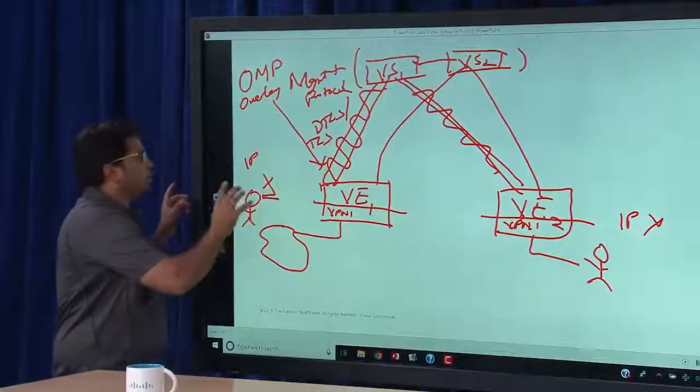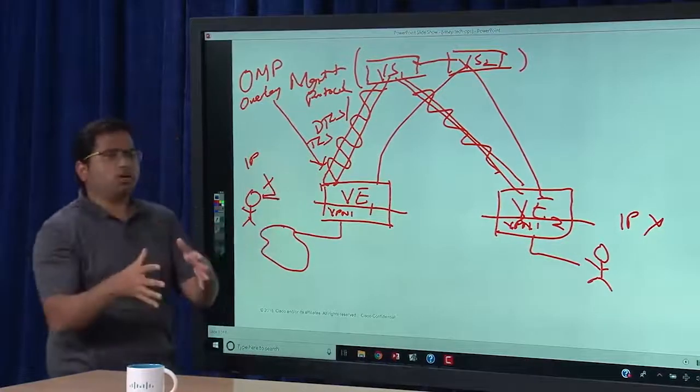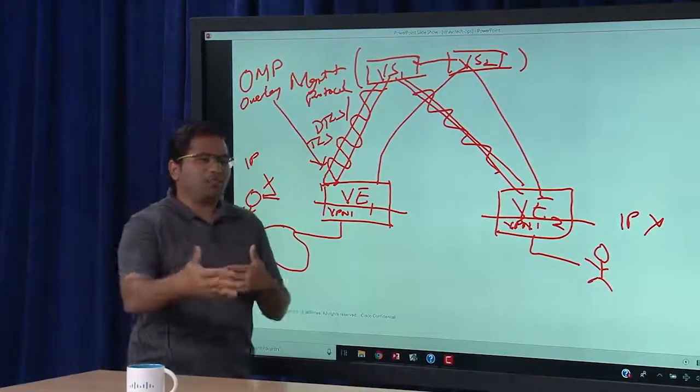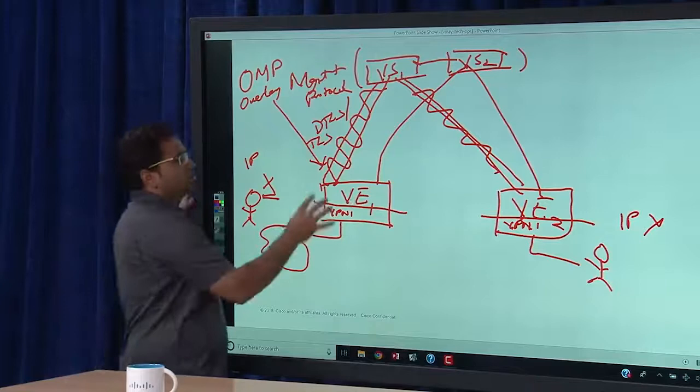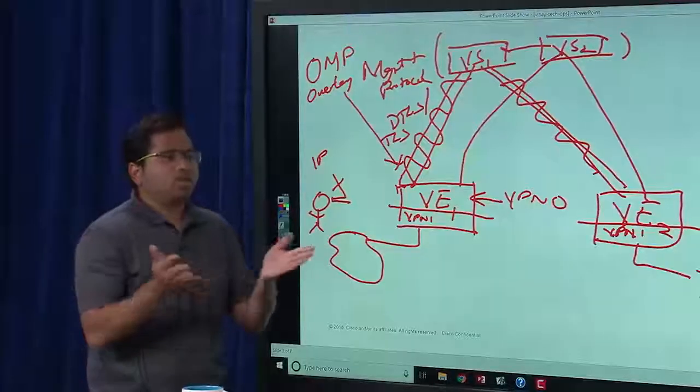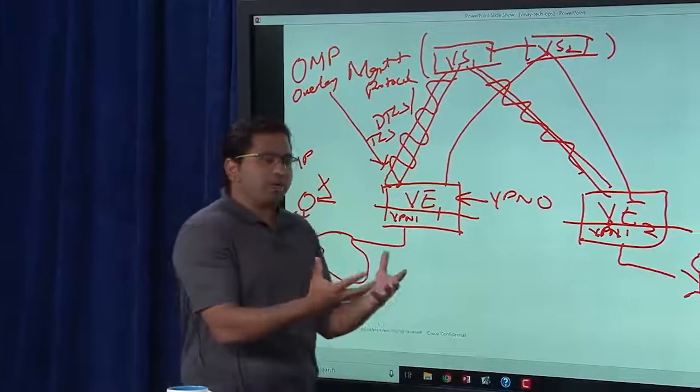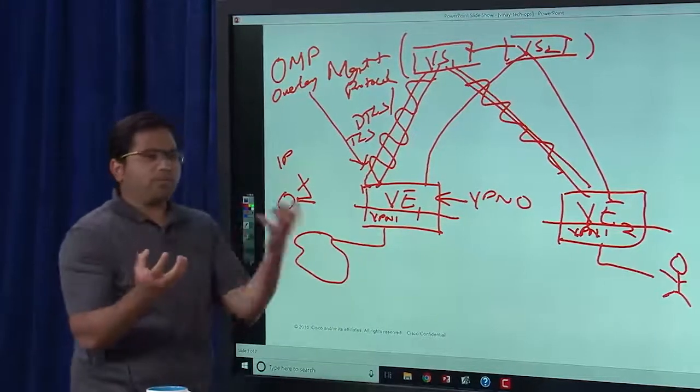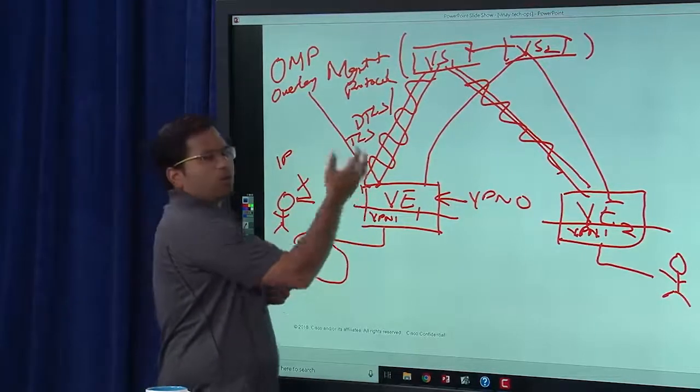So yes and no. So the TLOC is also another route for OMP. So each of the VPNs, so I suppose what you're describing is all the different things that we've looked at, the VPN, the TLOC, the protocol that's carrying that information for us in the system for SD-WAN is OMP. So everyone subscribes to OMP. So any VRF or VPN is a subscriber of OMP.